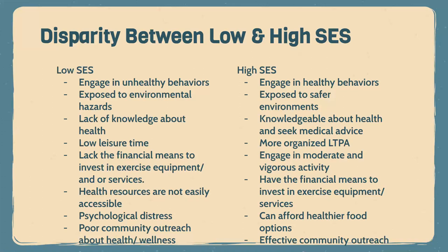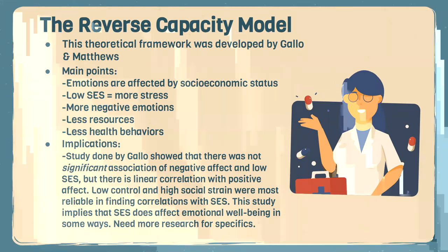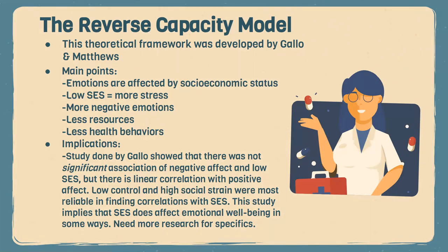The theoretical framework we chose to analyze is the Reserve Capacity Model, developed by Linda Gallo and Karen Matthews. This model applies to our presentation because it involves the study of socioeconomic status and how it affects low SES. The foundation of this model states that our emotions are affected by our SES — people with low SES are shown to have more stressful events in their life and therefore more negative emotions, making them less likely to use or have access to health resources and less likely to participate in health-promoting behaviors such as physical activity.